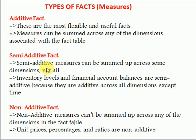Semi-additive fact means in every fact table you have some measures that you can only aggregate across some dimensions, not all dimensions. For example, if you have inventory or financial accounts — like a bank account, like you have a bank balance.